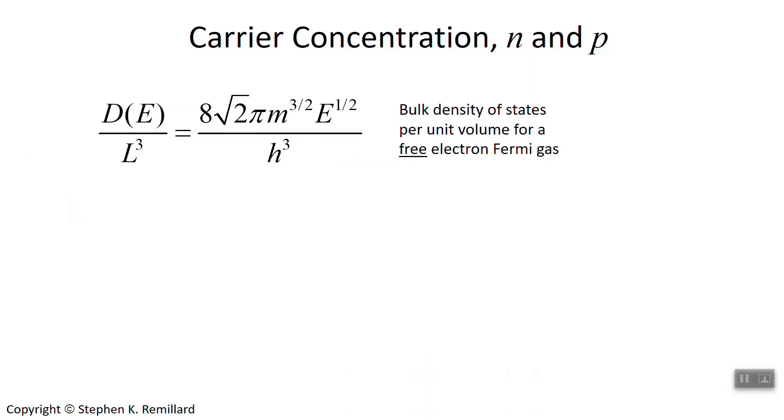So this is the density of states per unit volume that we arrived at last time, D(E) over the volume of the conductor L cubed. It goes as the energy to the one half, and it describes a gas of electrons, or a Fermi gas, inside of a metal. It works well, but for a semiconductor, we need to modify it a little bit, and that's what today's talk is about.